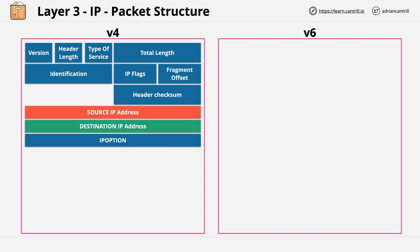Crucially, these are both IP addresses. There's also the protocol field, and this is important because IP is layer 3. It generally contains data provided by another layer — a layer 4 protocol.